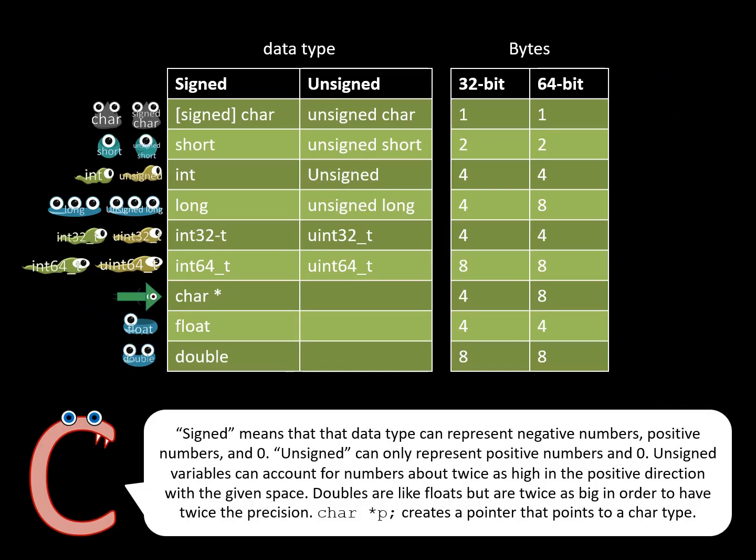Signed means that data type can represent negative numbers, positive numbers, and zero. Unsigned can only represent positive numbers and zero. Unsigned variables can account for numbers about twice as high in the positive direction with the given space. Doubles are like floats but are twice as big in order to have twice the precision. char *p creates a pointer that points to a char type.